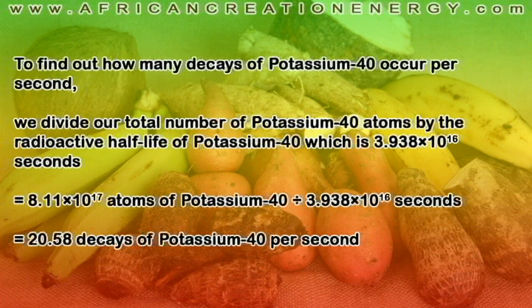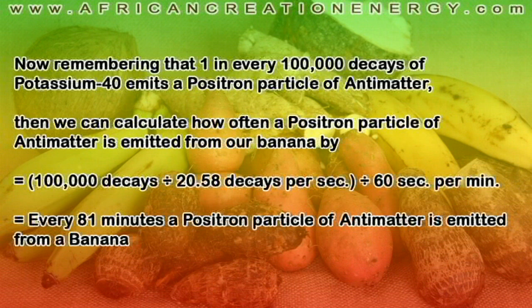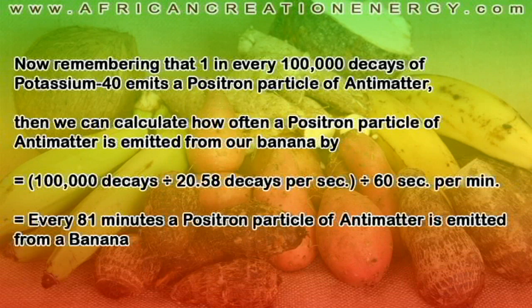To find out how many decays of potassium-40 occur per second, we divide the total number of potassium-40 atoms by the radioactive half-life of potassium-40, which is 3.9 times 10 to the 16 seconds. When we do this calculation, we get 20.58 decays of potassium-40 occurring in your average banana per second. Remembering that 1 in every 100,000 decays of potassium-40 emits a positron particle of antimatter, we can calculate how often a positron particle of antimatter is actually emitted. We find that every 81 minutes, a positron particle of antimatter is emitted from your average banana.